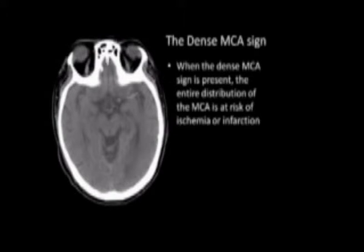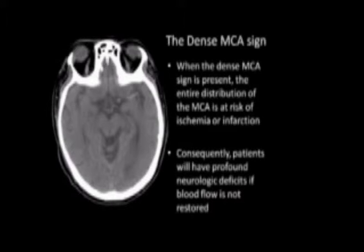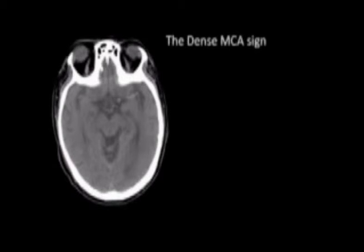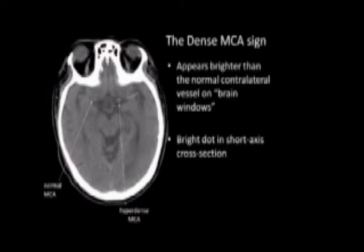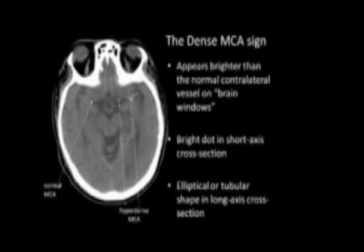When the dense MCA sign is present, the entire distribution of the MCA is at risk of ischemia or infarction. Consequently, patients will have profound neurologic deficits if blood flow is not restored. The dense MCA appears brighter than the normal contralateral vessel on brain windows. It is a bright dot in short-axis cross section and appears elliptical or tubular in shape in long-axis cross section.